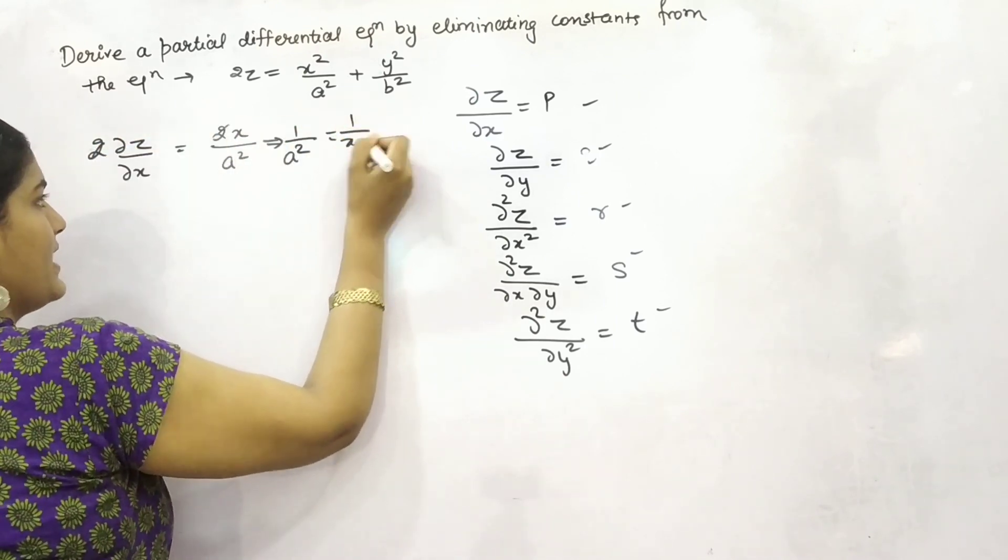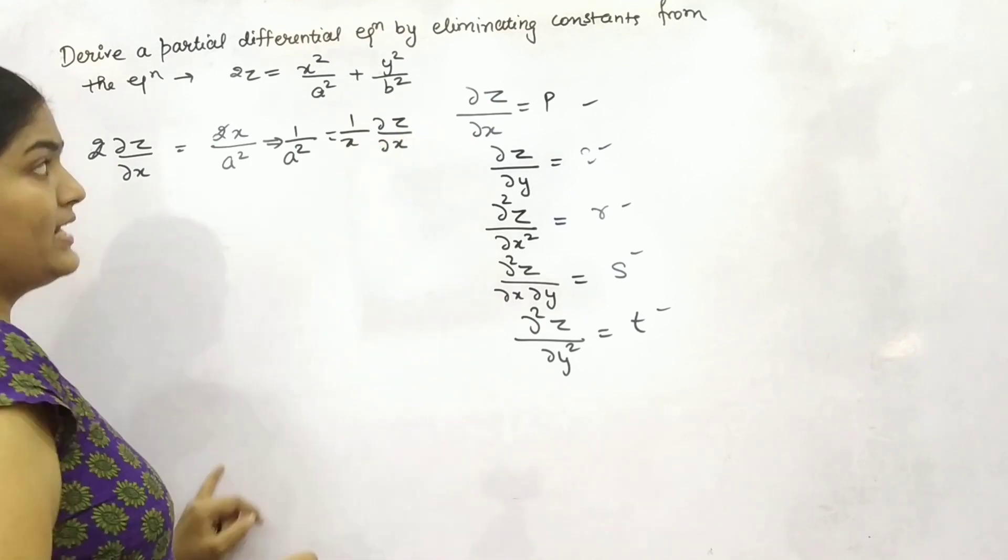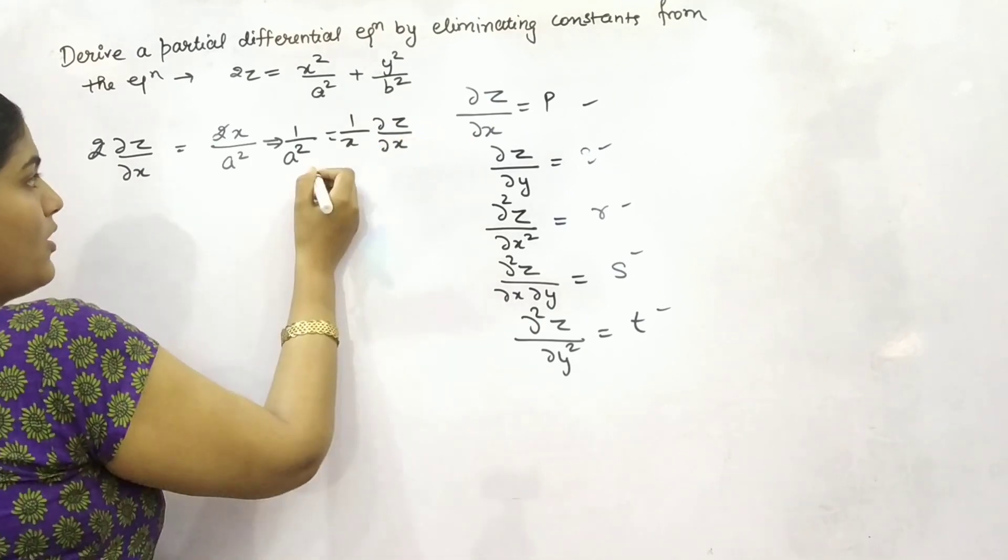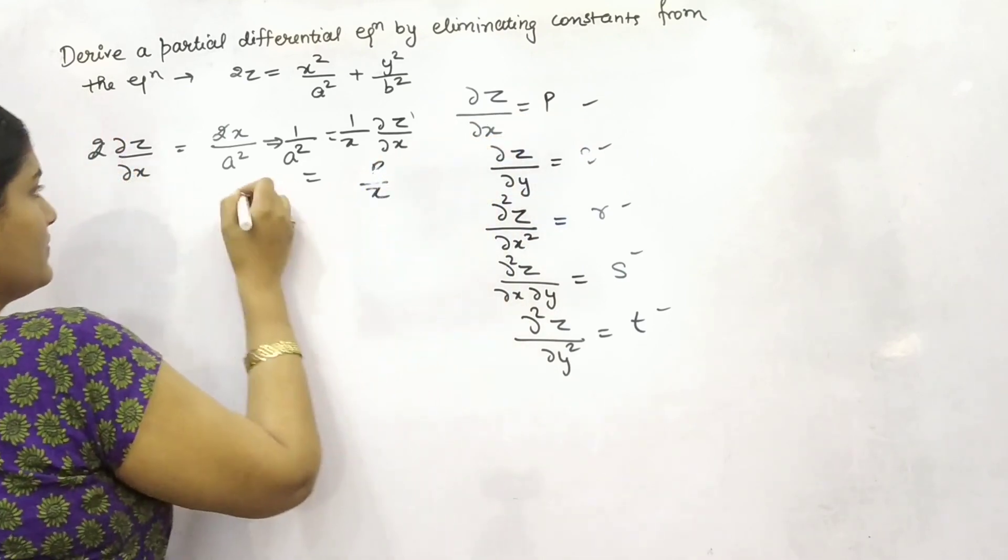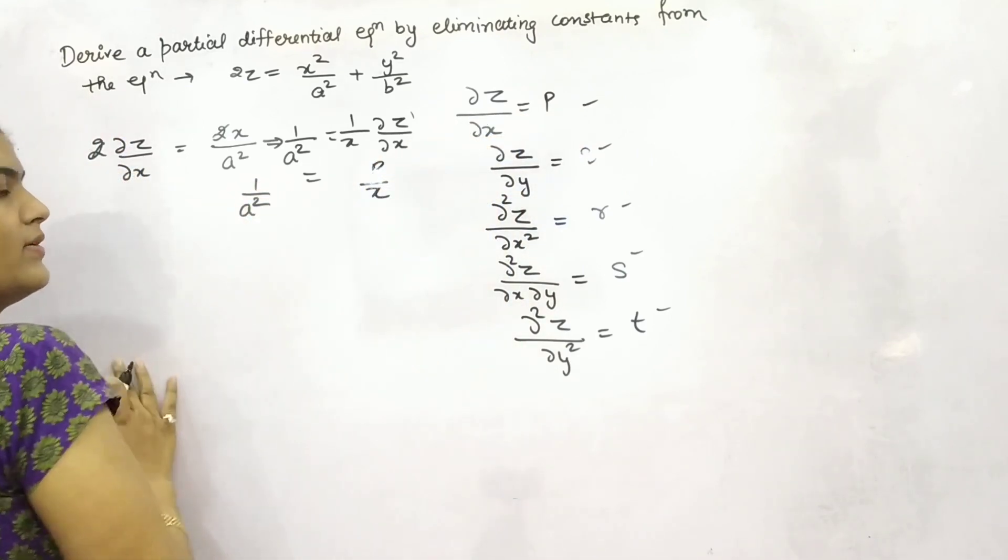It will be 1 by x partial differentiation of z. Or this can be written as p. So this is your 1 by a square.